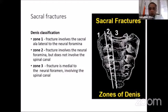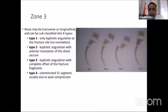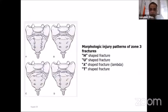Sacral fractures can be classified according to Denis into three zones. Zone one is where the fracture involves the sacral ala, lateral to the foramina. Zone two is the transforaminal longitudinal fractures. Zone three is medial to the sacral foraminae, so it passes through the spinal canal. Because zone three is dangerous, passing through the spinal canal, it is subclassified into four other types according to the fragmentation of the affected segment and the displacement. Especially, most of these fractures have a transverse limb, making them H or U-shaped in most instances.